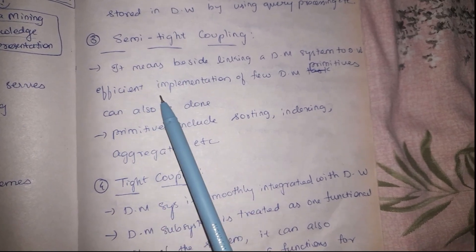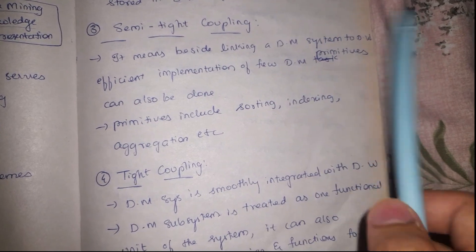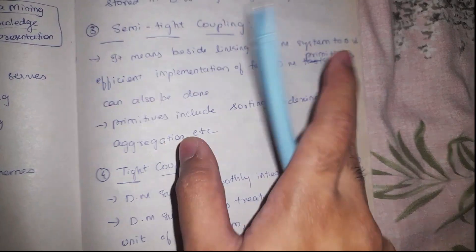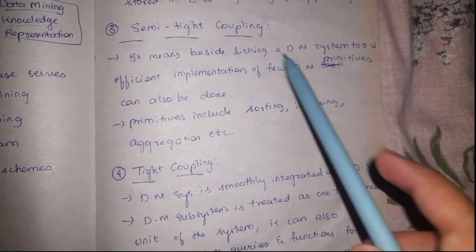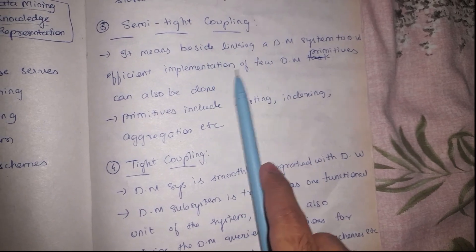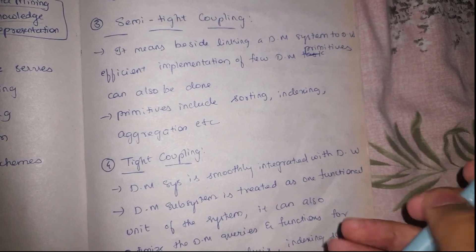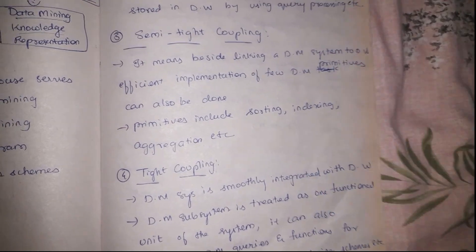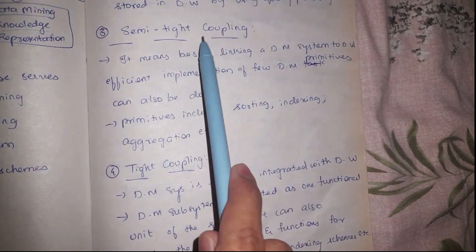The third mechanism is semi-tight coupling, where the data mining system is linked to the data warehouse to a limited extent — not completely, but more than 40 to 50 percent. Data will be fetched from the data warehouse, and apart from the data, some primitives of data mining — not all, but some, like sorting, indexing, and aggregation — will be effectively implemented.